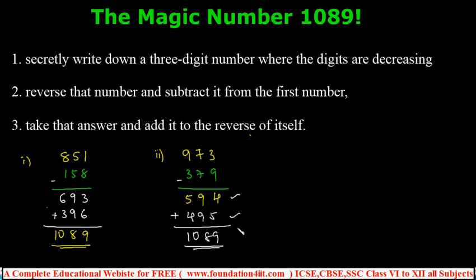99 times 11 equals 1089. Because this one is 6 times, this one is 5 times, it's a multiple of 99. The answer will always be the same.